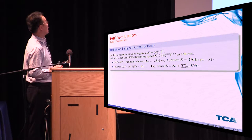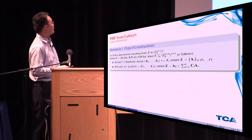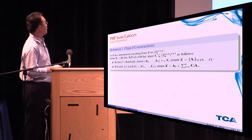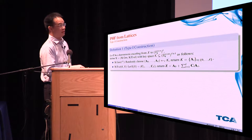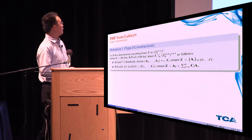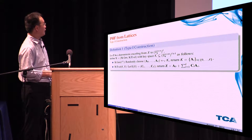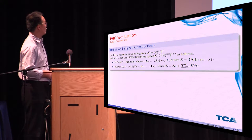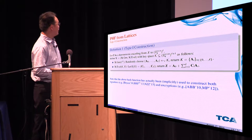They will give two constructions of PHF from lattice. The first one, let E be a deterministic encoding from a set X to a vector of matrices. The HGen algorithm first randomly chooses L plus 1 matrices and outputs them as the key. The HEvaluate algorithm simply first maps X with the encoding into matrices C1 to CL, and then returns Z equals to A0 plus the summation of Ci·Ai for i from 1 to L. Actually this function has been implicitly used to construct both signatures and encryptions.